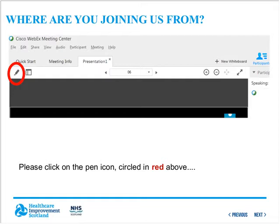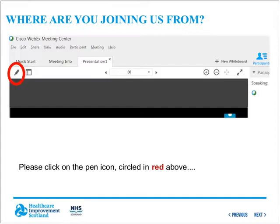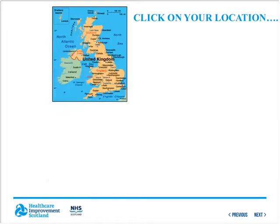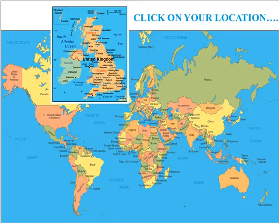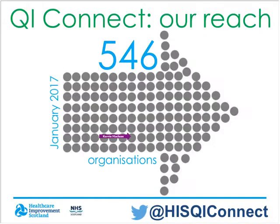We're keen to find out where you're joining us from today. Click on the annotation icon — the pen icon at the top left of your screen — then click the arrow, and click on the map to show where you're joining from. Welcome everyone — welcome to Gisela joining us from Canada, and lots of QI Connectors across Scotland and the UK. I'm now going to hand back to Simon to tell us more about QI Connect and the organisations joining us today.